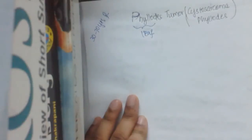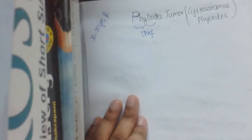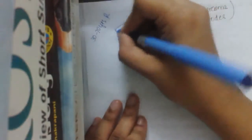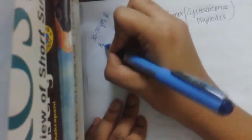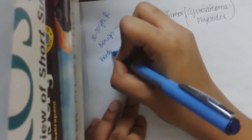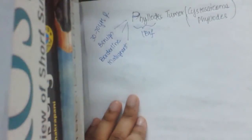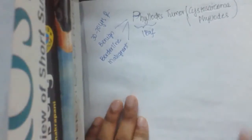Grossly it is a giant fibroadenoma, and histologically it has more cellular connective tissue. WHO later proposed the term Phyllodes Tumor. The term Cystosarcoma Phyllodes is a misleading term; Phyllodes Tumor is what is currently used. It is classified into three types: benign, borderline, and malignant.